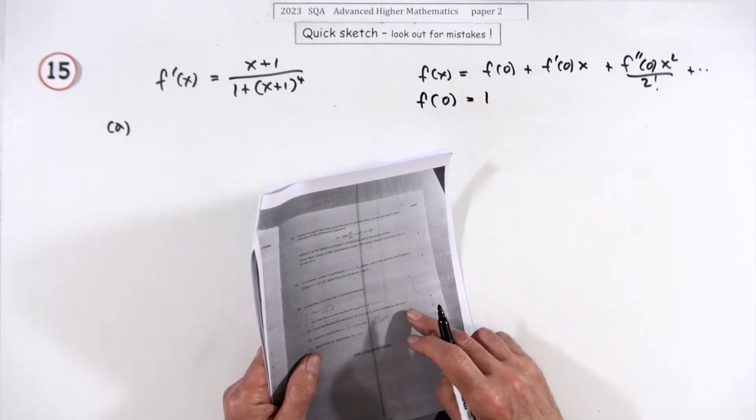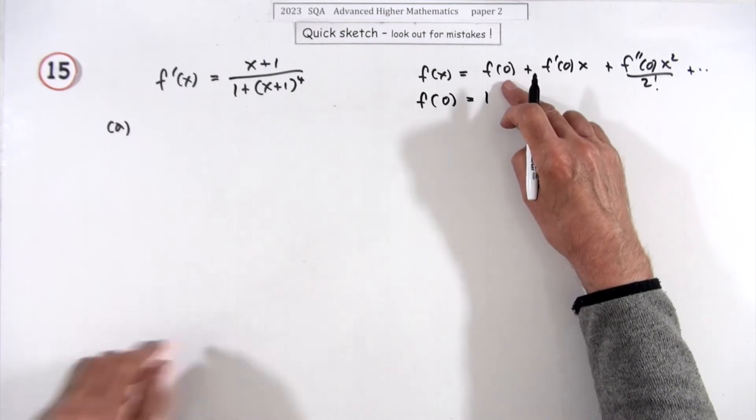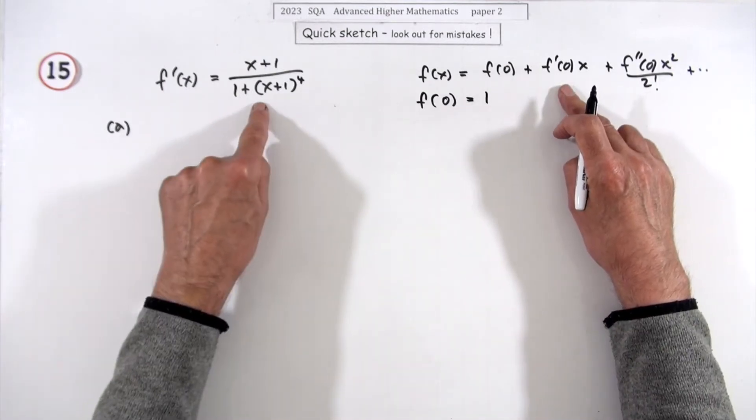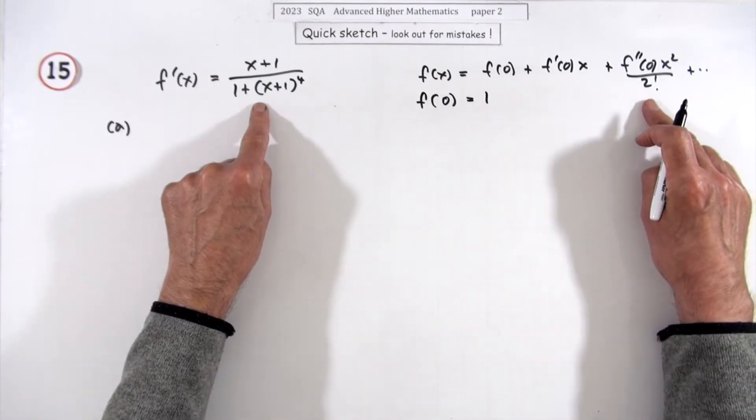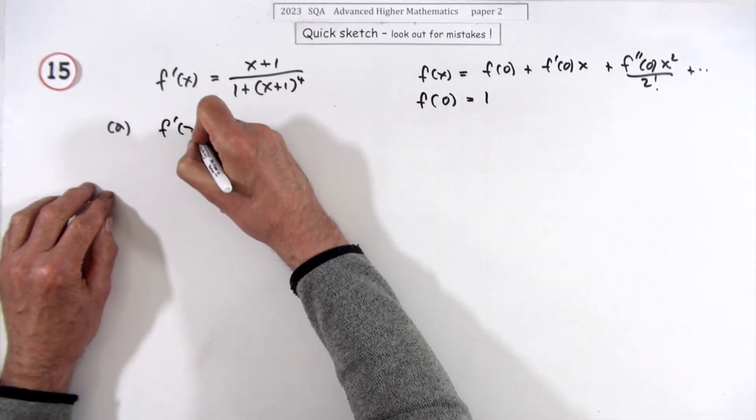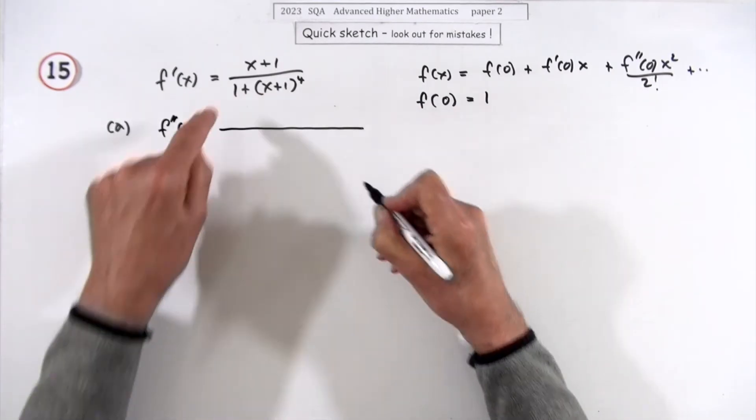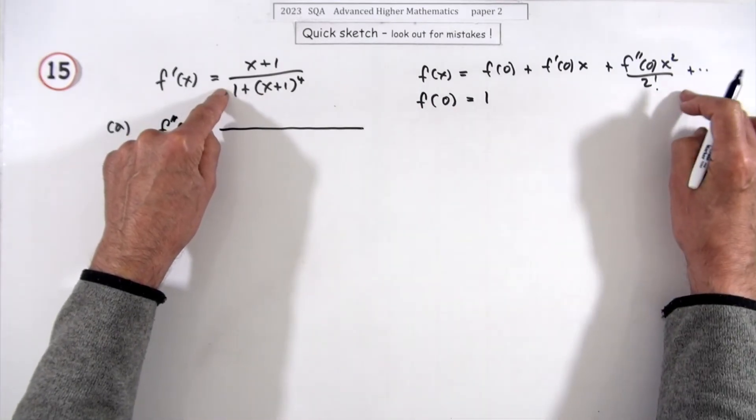From that, find the McLaurin expansion up to the terms in x². We know that one, we'll get that one just by popping zero into it, and we'll get that just by differentiating this. So if you differentiate that again, it doesn't matter what it comes to because I don't need to use it again, I just need to pop a zero into it.